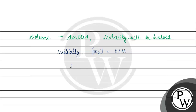But after addition of NaCl, the concentration of nitrate ion will be 0.05 molar, because mixing equal volumes doubles the total volume and halves the concentration.